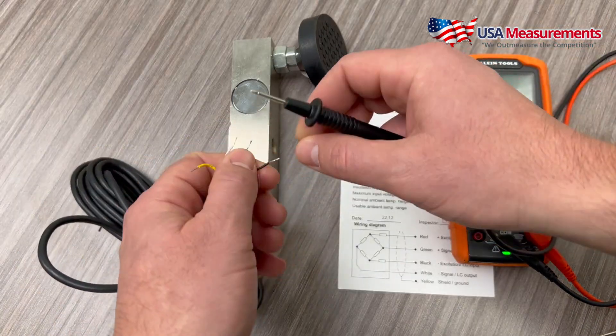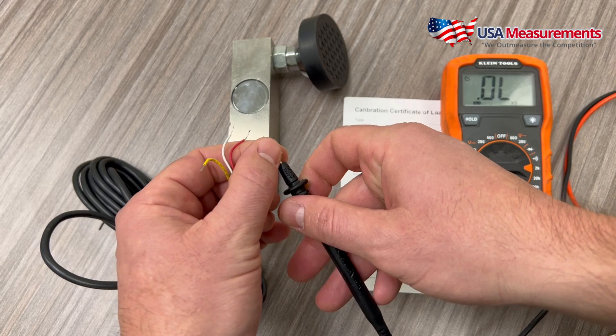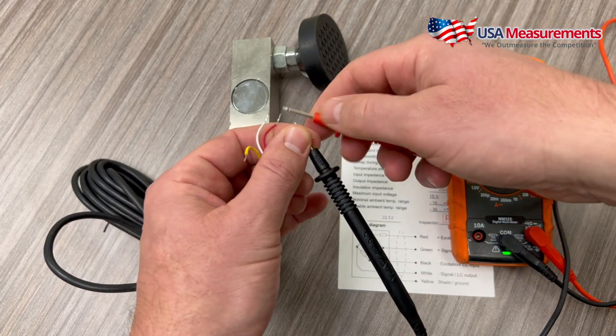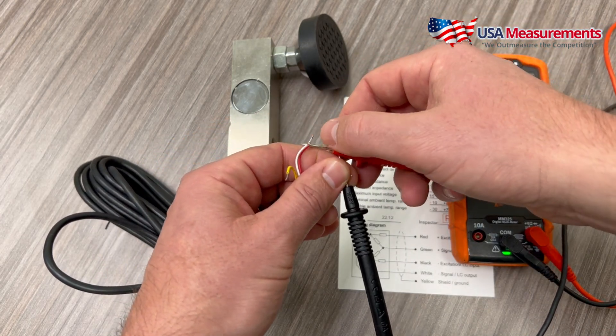Next we're going to take our black wire, which is negative, and then we'll take our red and match it to the red wire for positive.